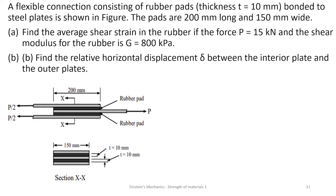This is our problem: a flexible connection consisting of rubber parts of thickness t = 10 millimeters, bonded to a steel plate as shown in the figure. The parts are 200 millimeters long and 150 millimeters wide. Find the average shear strain in the rubber if the force P is 150 kilonewtons and the shear modulus of the rubber G is 800 kilopascals. For part B, we are to find the relative horizontal displacement.